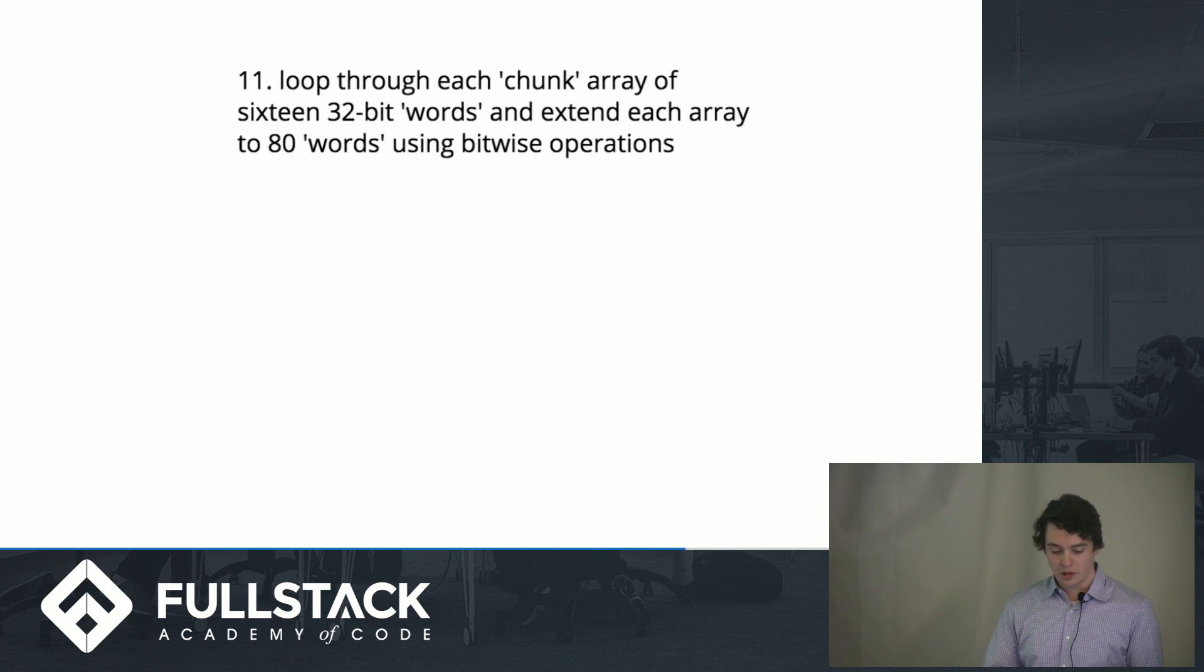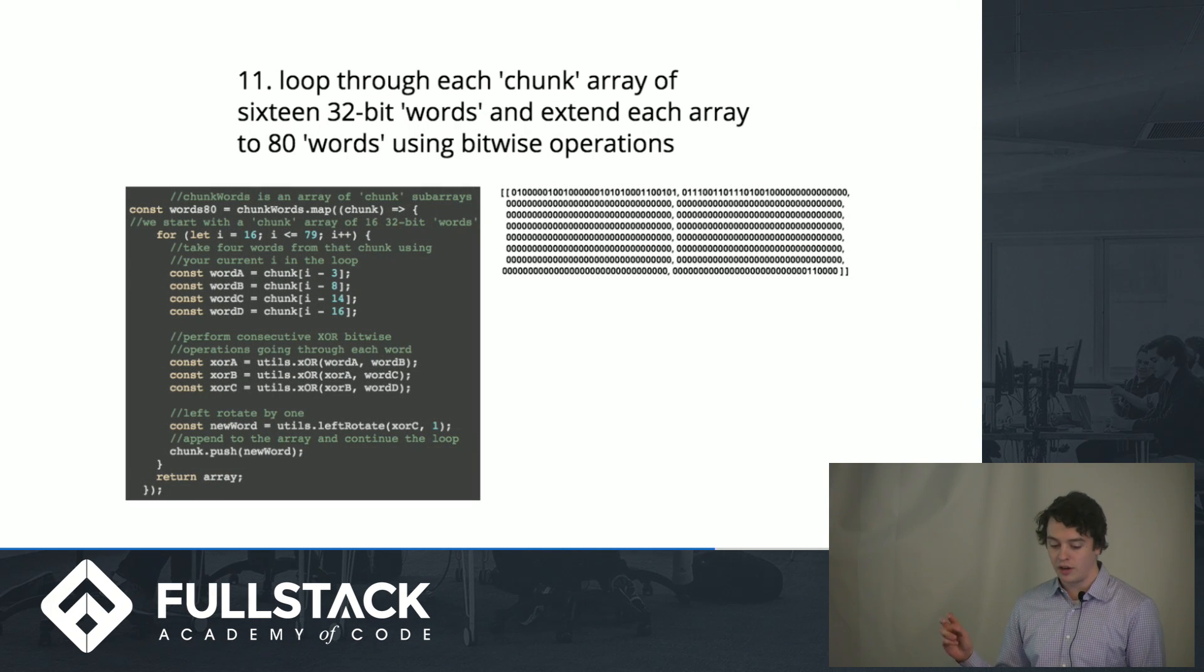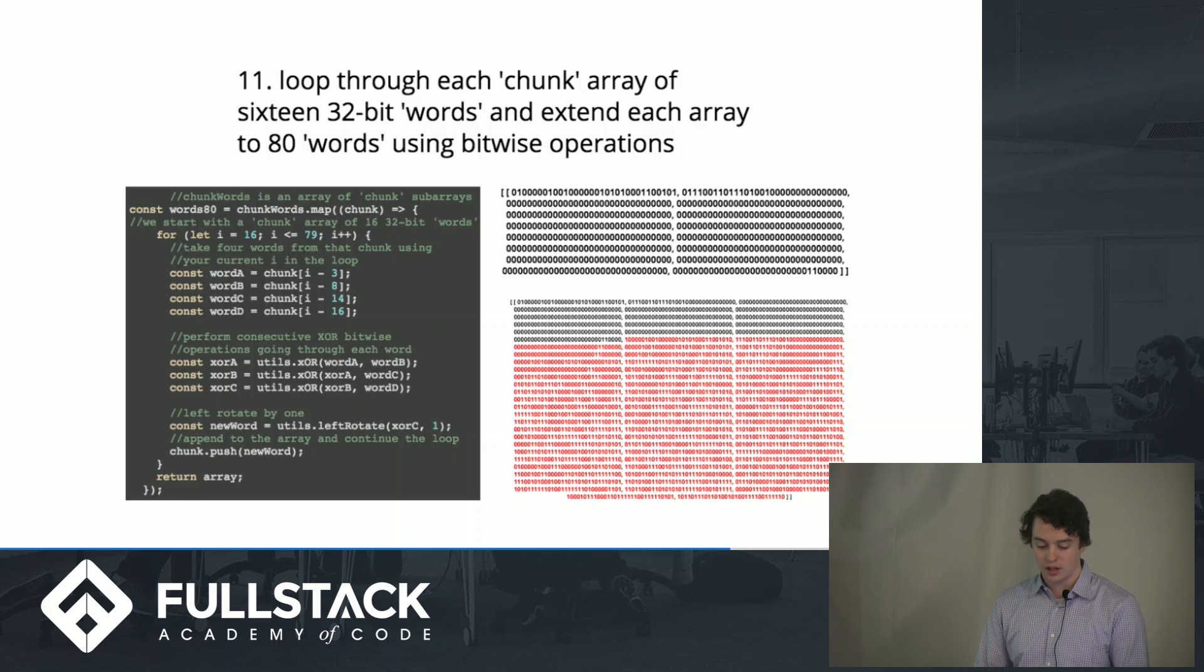So this is where it gets a little more complex. I'm not going to walk through it line by line, but you basically loop through each chunk array of 16 32-bit words and extend it to 80 using bitwise operations. So just every word here, performing a bunch of XORs, and then pushing onto the array with that created new word until they're 80. It looks like that.